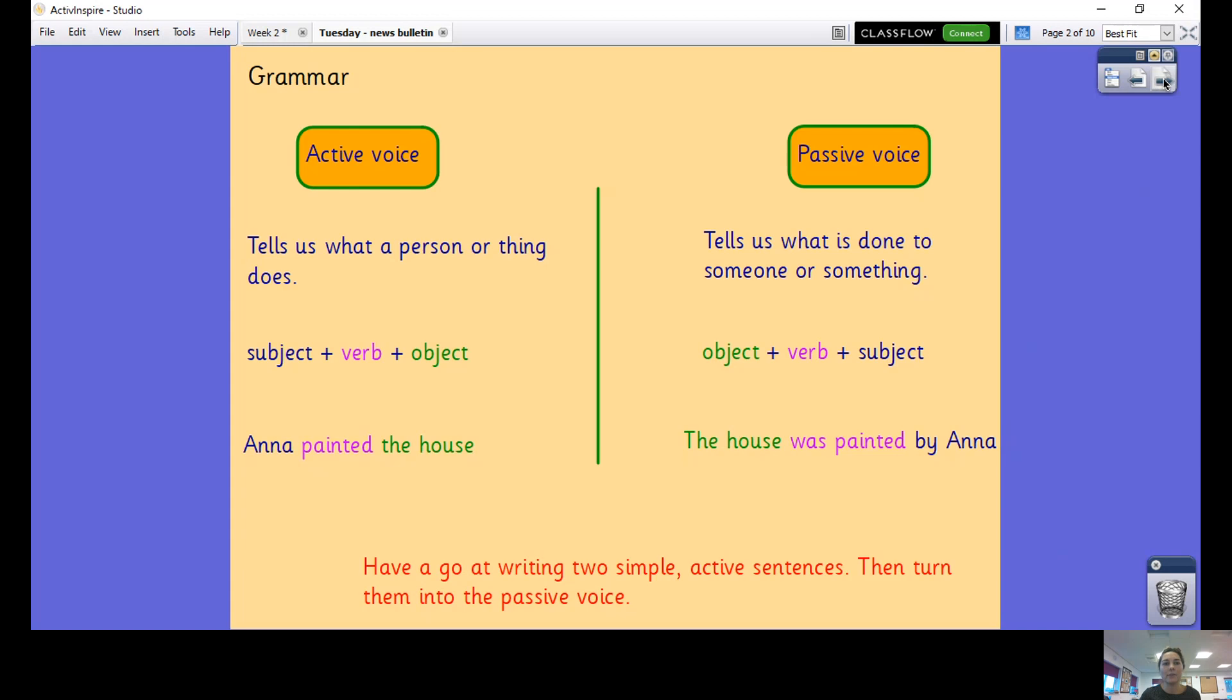We are going to have a little bit of a look at some of our grammar. Now we're thinking about the passive voice and the active voice, because in newspaper reports you'll find that they often use the passive voice. Sometimes they don't know who's done something, or they do but it's often written using examples of the passive voice. So that's what we're going to be having a look at for the next week.